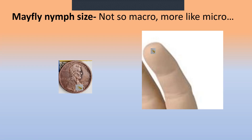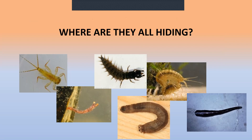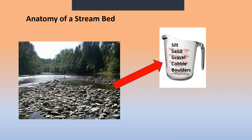You might wonder: I'm at or in the water — I don't see these things floating around. Where are they hiding? To answer that, we have to look at the anatomy of a stream bed, because these creatures all pretty much live on the stream bed under the water. A stream bed is a combination of silt, sand, gravel, cobble, and at times boulders.